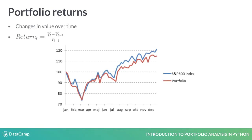Portfolio returns are changes in value over time. In this example, you see how a portfolio's value in red changes over the time span of a year. You can also compare it to the line in blue, which is the S&P 500 return over that year. Returns are an indication of how well a portfolio performed over time.